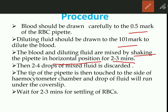The blood and diluting fluid are mixed by shaking in a horizontal position for two to three minutes. Then two to four drops of the mixed fluid are discarded. The tip of the pipette is then touched to the side of the hemocytometer chamber and a drop of fluid will run under the coverslip by capillary action. Wait two to three minutes for settling of RBCs.